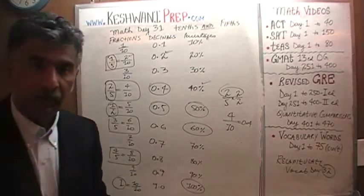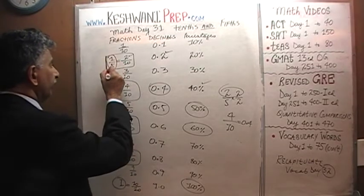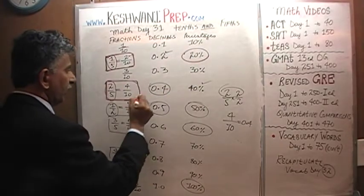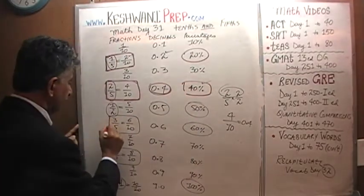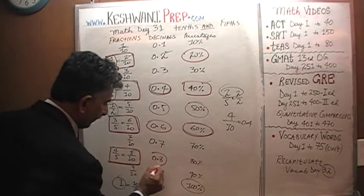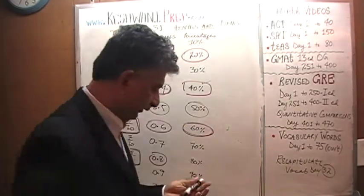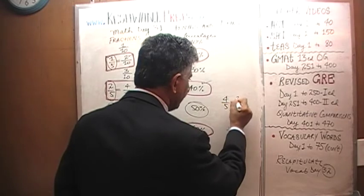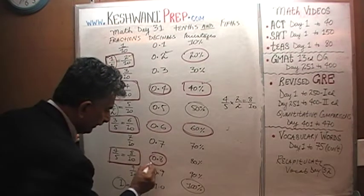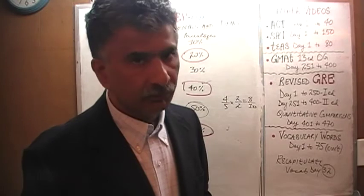So what do we want to get out of the whole exercise? We want our fifths: 1 fifth is 20%, 2 fifths is 0.4 or 40%, 3 fifths is 0.6 or 60%, and 4 fifths is 0.8 or 80% — because 4 fifths multiplied top and bottom by 2 gives 8 tenths, which is 0.8 or 80%. Learning the fifths is no different than learning the tenths. Do you understand? Bye now.